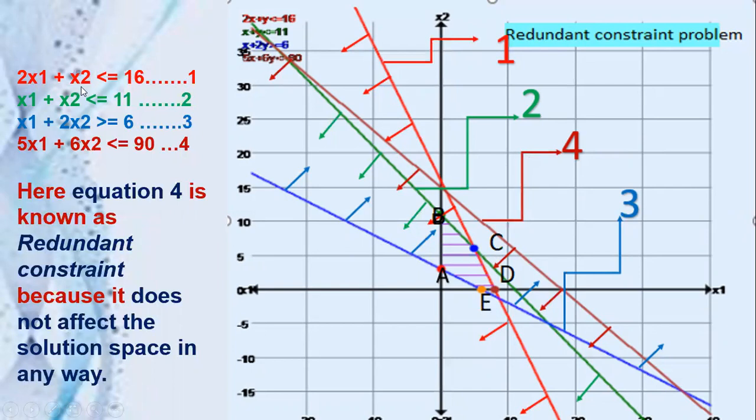If you take equation 1, which is red in color, the equation is 2x1 plus x2 less than or equal to 16. Take any random point below that line, say (0,0). Substitute (0,0) in this equation: 0 is less than or equal to 16. Yes, obviously it satisfies this equation. So the arrow mark should be towards the origin. I have drawn the arrow marks towards the origin.